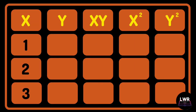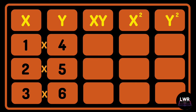Let us place the x variables in the first column, while the second column contains all the y variables. The third column, xy, is the combination of multiplying each x variable by each y variable.